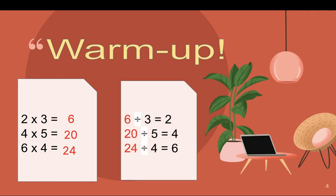That's correct. We will get the remaining factor. So 6 divided by 3 is 2, 20 divided by 5 is 4, and 24 divided by 4 is 6. So what do you observe about the relationship of multiplication and division? Based on this, we can say that division is the inverse of multiplication.